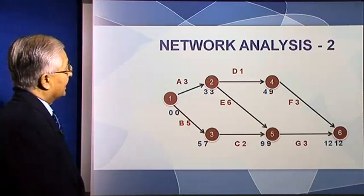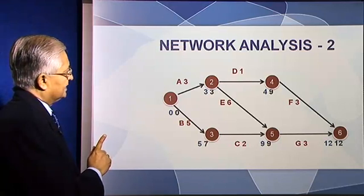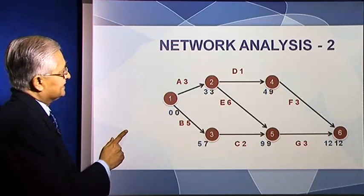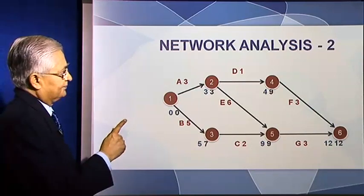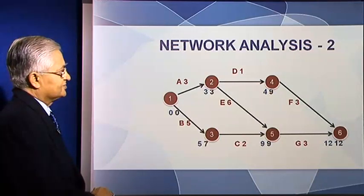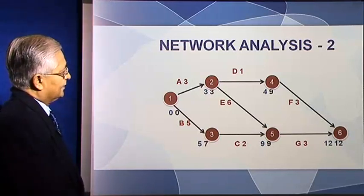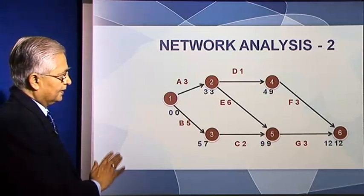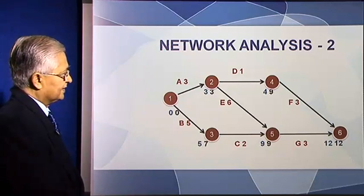Now let us look at circle four. The earliest we have reached circle two is at the end of the third month — the blue figure. Activity D takes one month, so the earliest we can reach event four is at the end of month four, which is the blue four shown there. Now let us come to event five. To reach event five, activity E needs to be over and activity C also needs to be over. Two activities need to be over to reach event five.